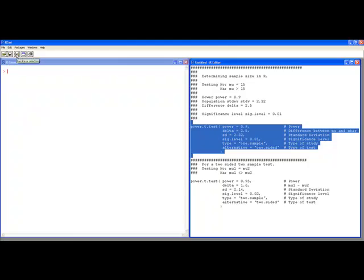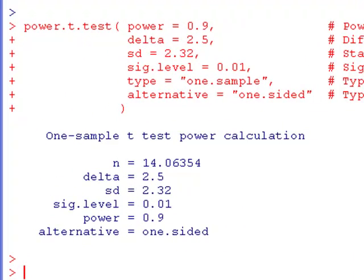So here's the output, and look, right at the very top of the output, it tells you n equals 14.06354. Wait a minute. I can't get 14.06354 units. I can get 14 or I can get 15. In order to preserve the power, you need to always, always, always round this up.